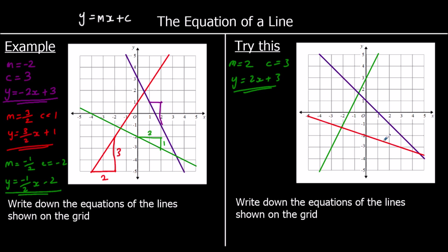The red line goes across three, down one. So the change in y over the change in x gives a gradient of minus a third — for every one it goes across, it goes down a third. Its y-intercept is negative two. So it's y equals minus a third x minus two.